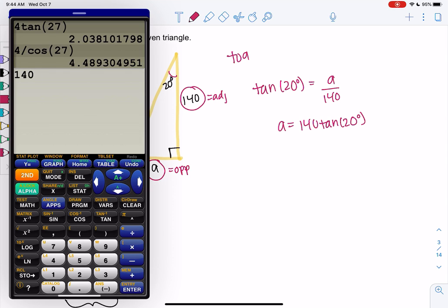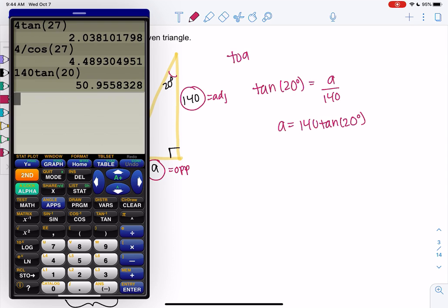So again, 20 is not on our unit circle, so we'll approximate. So A is about 50.96, or 956, since I did three decimal places on the other ones. So only use the calculator when it's not on the unit circle.